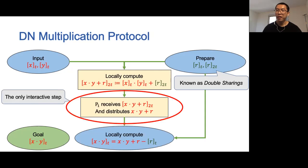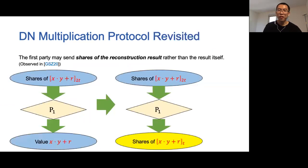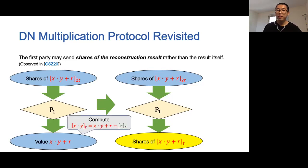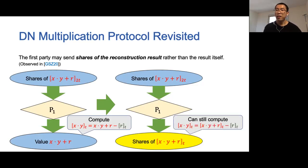Note that the only interactive step is the second step, where the first party needs to receive the whole sharing of x times y plus r and distribute the result to other parties. In GSC20, Goya and others observed that the first party may send shares of the reconstruction result rather than the result itself. Recall that in the original protocol, the reconstruction result is used to compute the final sharing of x times y, achieved by subtracting the random sharing of r. If the first party sends shares of the reconstruction result, all parties can still obtain a sharing of the multiplication result by subtracting the random sharing of r from the sharing distributed by the first party. This observation leads to a marginal improvement in GSC20.